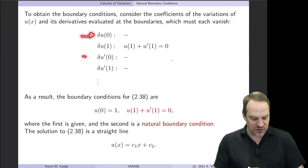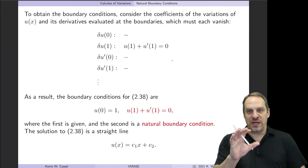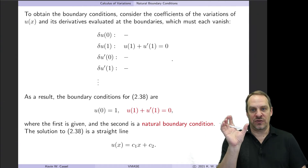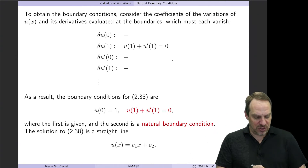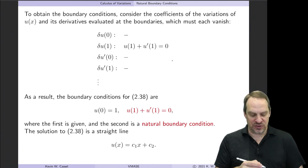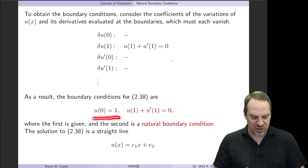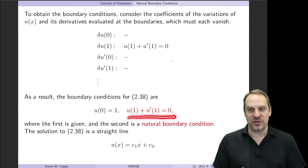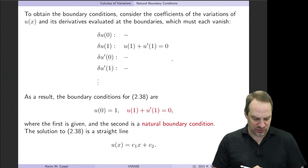Any coefficient of a variation of something we don't know must vanish — that's the key principle, even for other variations that don't apply in this particular case. So we have: the Euler equation u'' = 0, the fixed boundary condition u(0) = 1, and the natural boundary condition u(1) + u'(1) = 0 at x = 1.